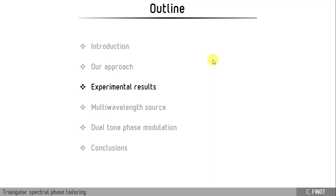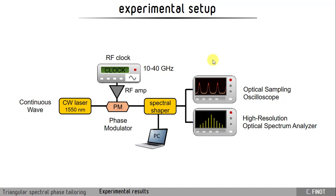Let me describe the experimental setup that we have done. We start from a continuous wave. We use a phase modulator driven by a sinusoidal wave at different repetition rates from 10 up to 40 GHz. For results at 40 GHz, we use an RF amplifier. Then, we use a spectral shaper. And at the output, we use an optical sampling oscilloscope and a high-resolution optical spectrum analyzer to control the output pulse train.